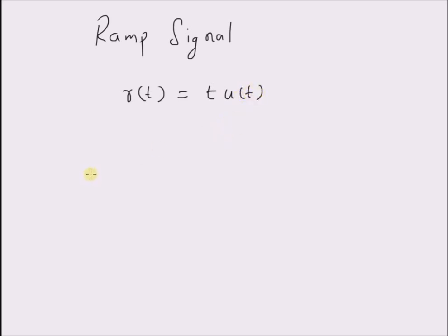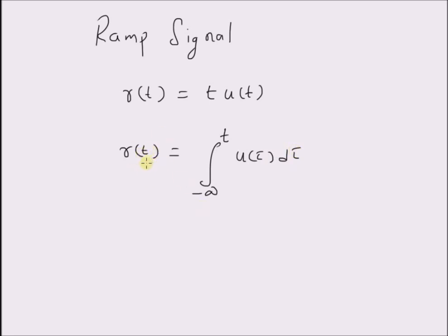Now let us look at how this definition is formed. The ramp signal R of t is fundamentally defined as the integral from minus infinity to t of u of tau d tau. That is, the ramp signal at any time t is the area under the unit step signal until that time t.